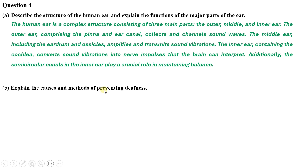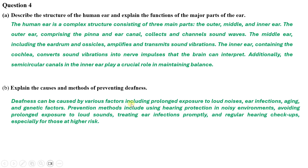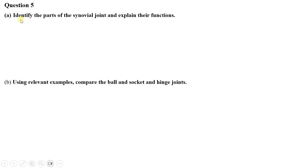Question four (b) — causes and methods of preventing deafness: deafness can be caused by various factors including prolonged exposure to loud noises, ear infections, aging, and genetic factors. Prevention methods include using ear protection in noisy environments, avoiding prolonged exposure to loud sounds, treating ear infections promptly, and having regular hearing check-ups, especially for those at higher risk.